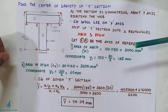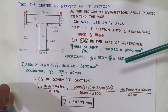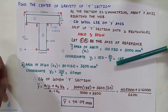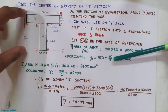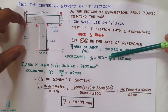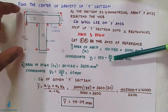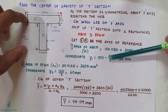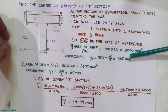One thing to remember: the centroid of a rectangle lies at b/2 and d/2. In this particular figure, it will be d/2. The depth is 30 mm, so d/2 is 30 divided by 2. Therefore, 150 minus d/2 — that is, 30 divided by 2 — gives 135 mm.